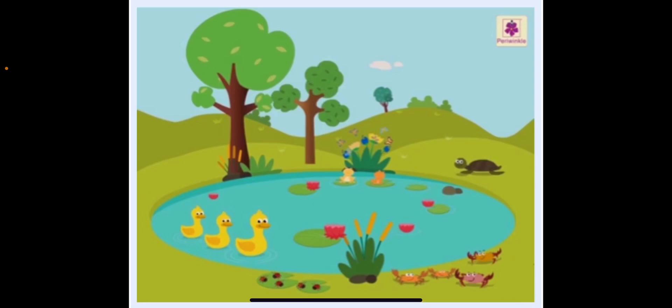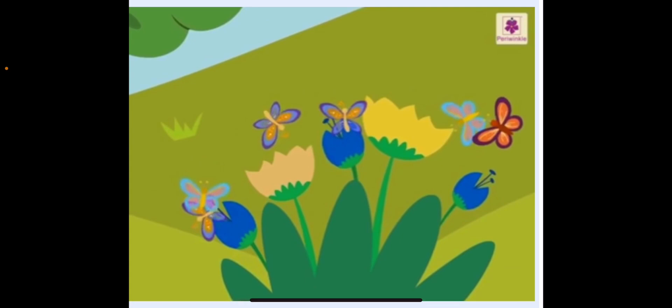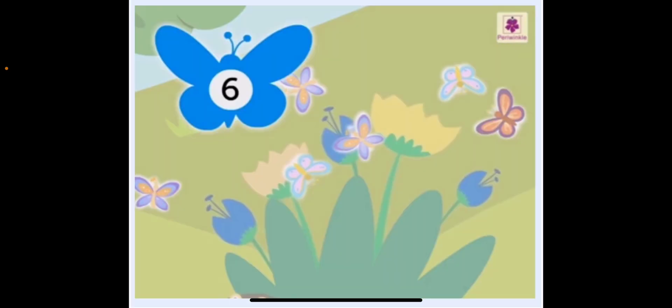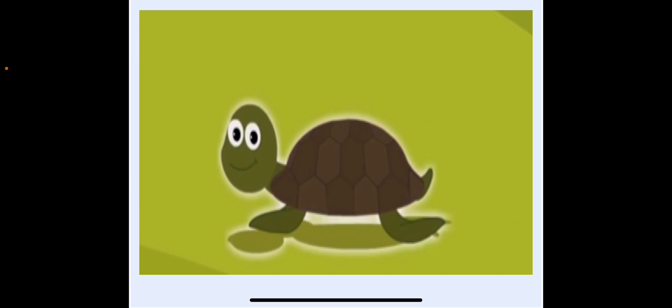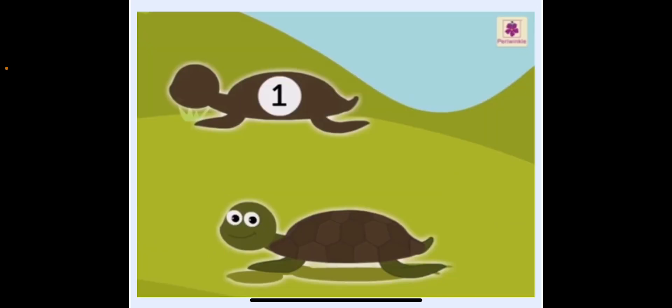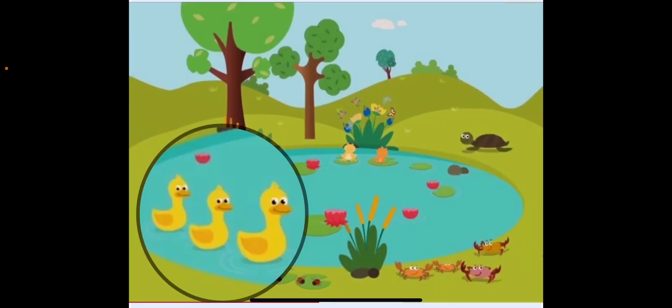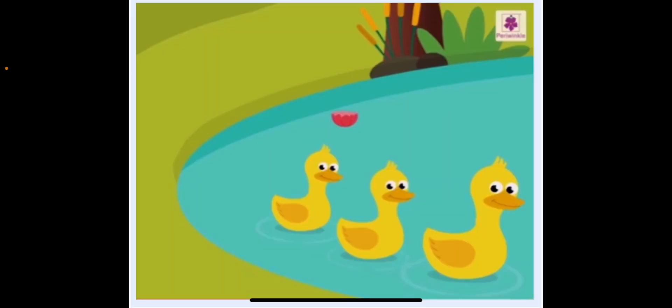Now, as you can see in the picture, there are many creatures around the pond. Let us see and count these creatures. Let us begin by counting the number of butterflies: one, two, three, four, five, six — so there are six butterflies. Now let us count the number of turtles — we have only one turtle.